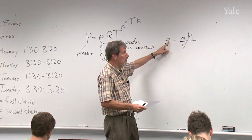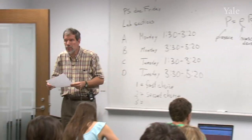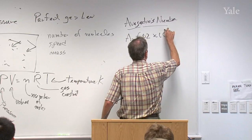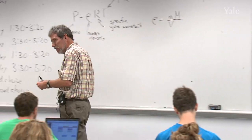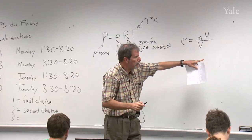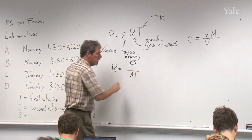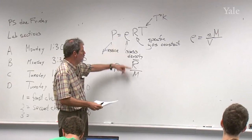The specific gas constant is defined as the universal gas constant divided by the molecular weight. So for air it's one number, for hydrogen it's a different number, and so on. For air, the average molecular weight is 29, and the universal gas constant is 8,314, so the specific gas constant for air is approximately 287 joules per kilogram per Kelvin.